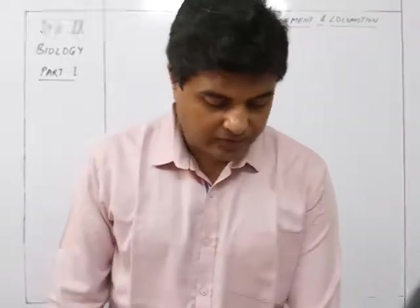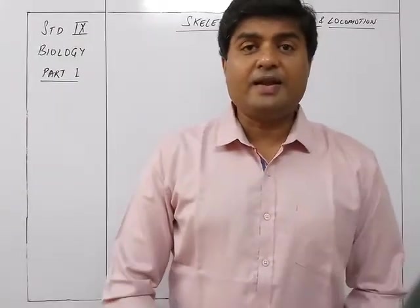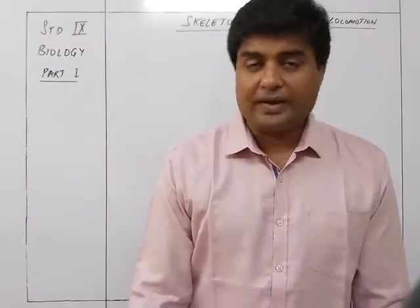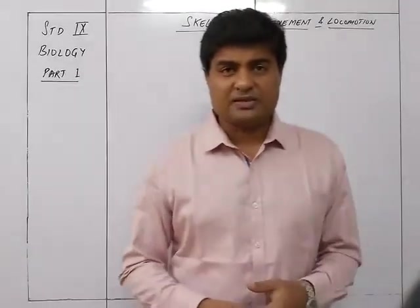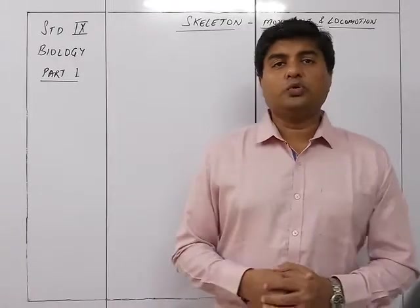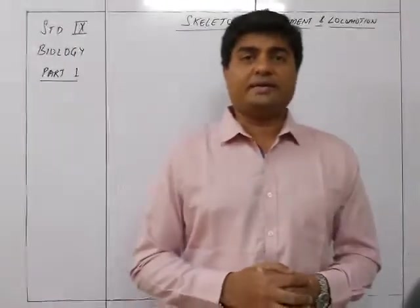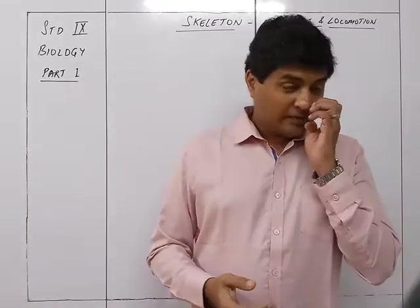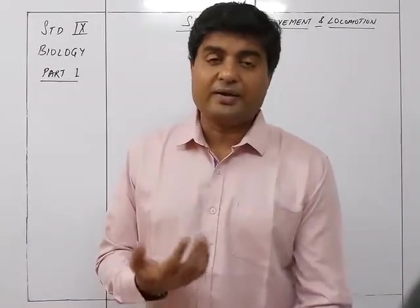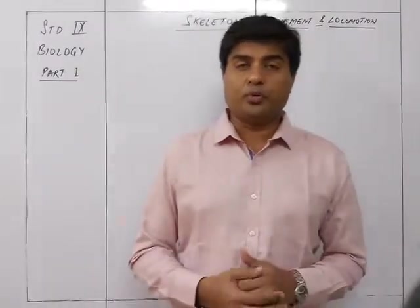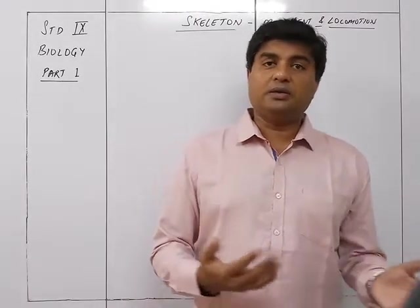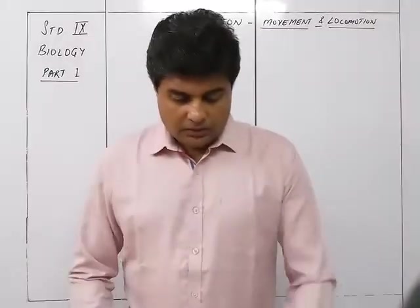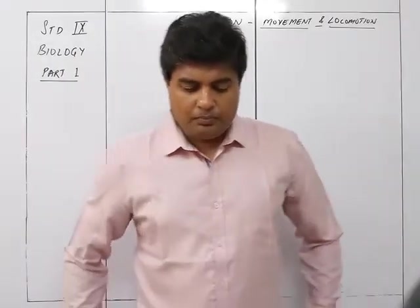Hello everybody, today we start with a new chapter in Standard 9th ICSE — Biology Chapter 12: Skeleton, Movement and Locomotion. This chapter is basically about bones, joints, and muscles — the things which help us do movement and locomotion, that is movement of our body. That is the skeletal system: mainly the different kinds of bones, the different kinds of joints connecting the bones, and the muscles which make movement possible.